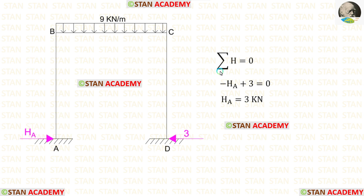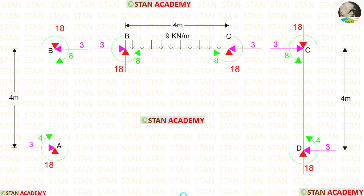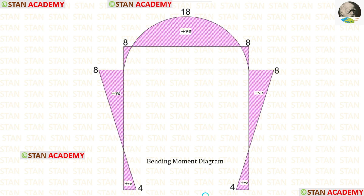Applying sigma H = 0, we can find HA. Taking moments about A and assuming MA acts in the clockwise direction, we get a positive value for MA, confirming our assumption is correct — it acts in the clockwise direction. Now let us make the free body diagram so we can easily draw the shear force and bending moment diagrams. The shear force diagram and bending moment diagram are drawn using the superposition method.